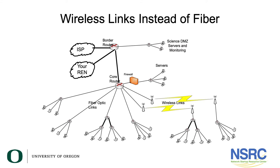Some of you might find that you can't afford fiber to some locations, or it's very difficult because part of your campus is on the other side of a busy street you don't own. In that case, you will serve those remote buildings with wireless. It's very important, however, that you serve those remote buildings as if it were fiber — each remote building needs a separate interface on the core router. You build a single point-to-point link out to the remote building; a different remote building gets a different interface, a different IP subnet, and a different point-to-point link.